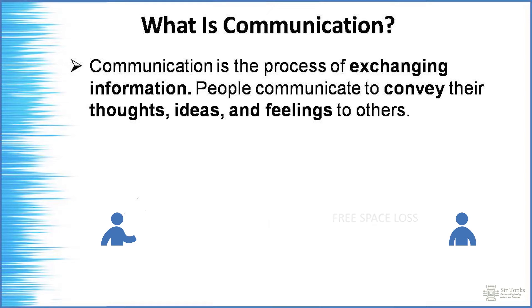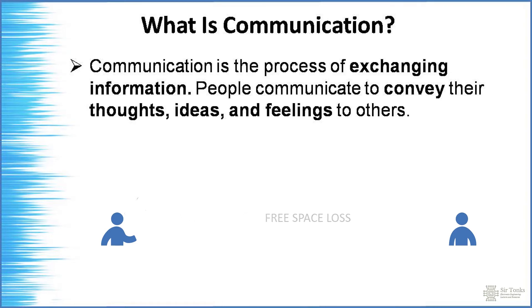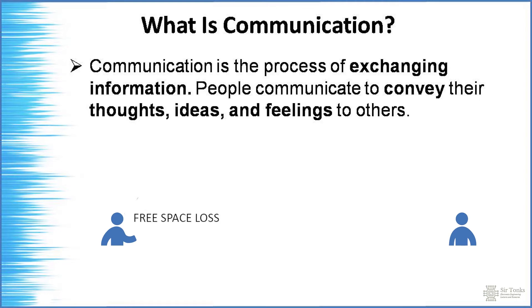Our voice attenuates in free space — that is the nature of things, and it also happens in solids. In existing telephone lines, coaxial cable or twisted pair have a specific attenuation rate. Before fiber optics, for every five kilometers, a device called an amplifier was placed along coaxial cable or UTP (unshielded twisted pair) lines.